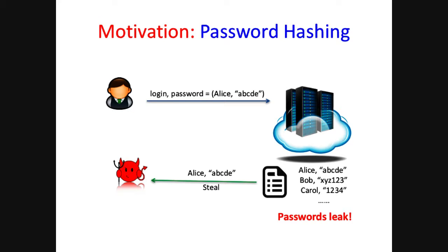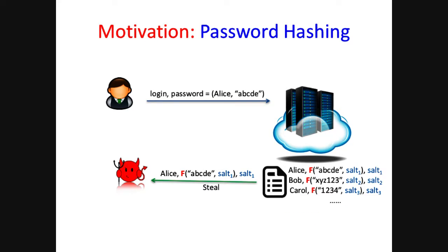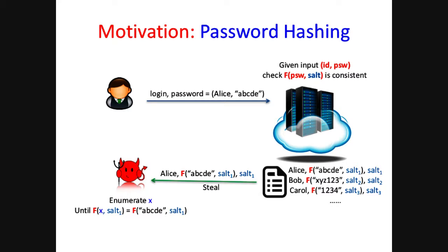So mostly a random hash function is used. Instead of storing the ID and password plainly, we store the ID and the hash of the password, along with salts. The website will check if the hash of the password is consistent with the information on the server. Now, even if the adversary knows the information on the server, the only thing he can do to log in as another user is to enumerate all possible passwords until the hash matches. So the question is: what is the right function we should use?